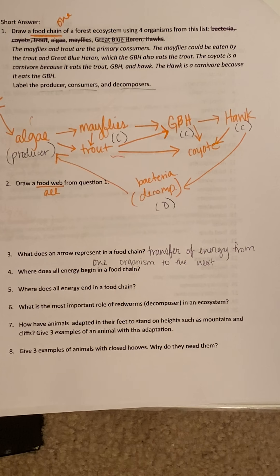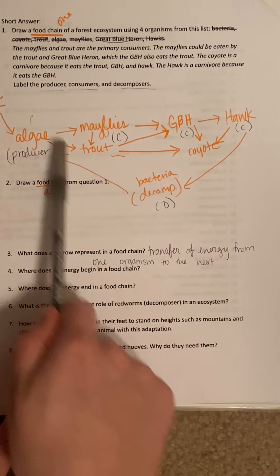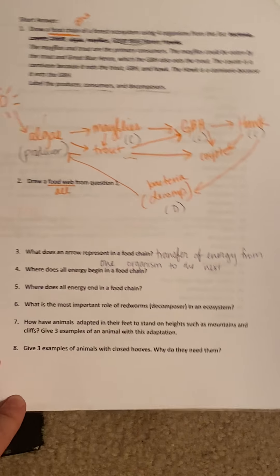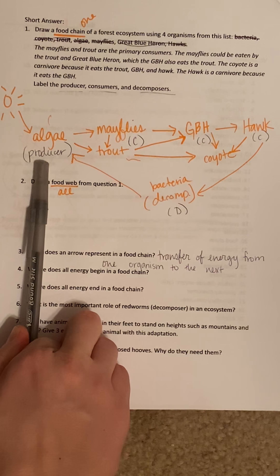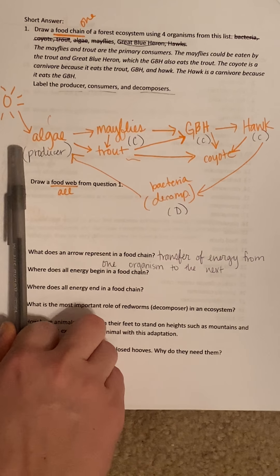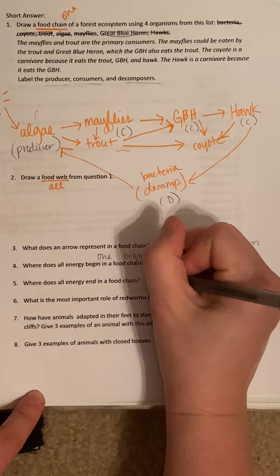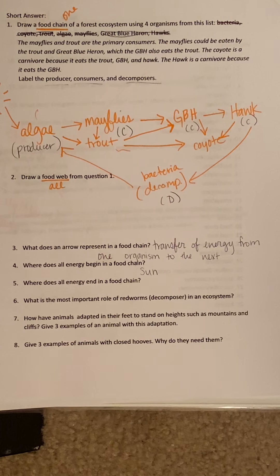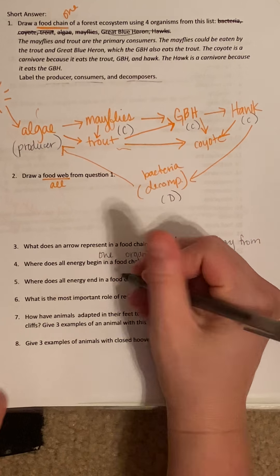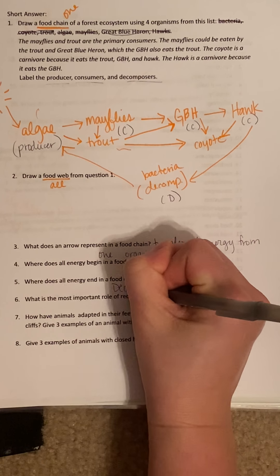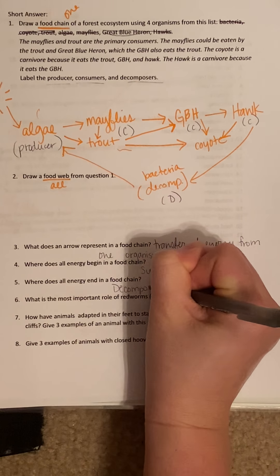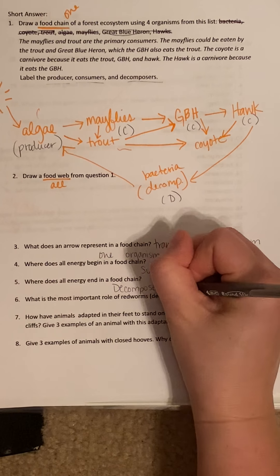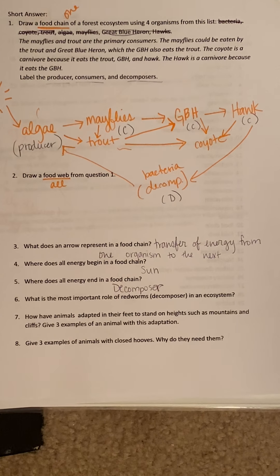Where does all energy begin in a food chain? Every single time, none of these organisms can create energy on their own — it has to come from the sun. Even the producer that creates its own food cannot do that without getting energy from the sun. So it always begins with the sun, every single time. No sun, no organisms can get energy. Where does all the energy end in a food chain? It will always, always end with a decomposer. Otherwise, you have a buildup of dead animals, plants, and waste.